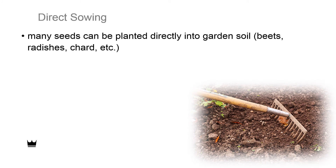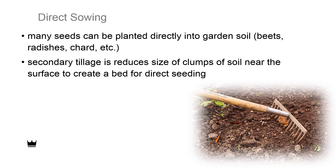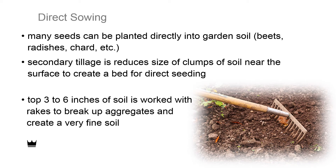Many seeds can be planted directly into garden soil. This is often recommended for root crops like beets, radishes, chard, etc. To prepare a seed bed, secondary tillage reduces the size of the clumps of soil near the surface to create a very fine seed bed for direct sowing. The top three to six inches of soil is worked with rakes to break up aggregates and create a very fine soil.